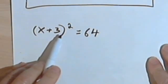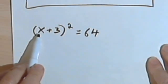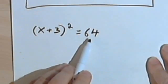I've got x plus 3 and that whole quantity, the expression x plus 3 squared, equals 64.